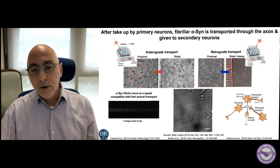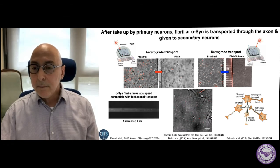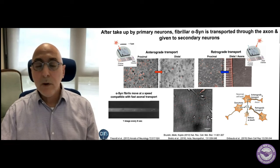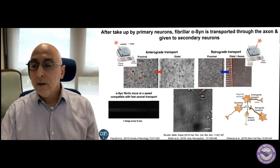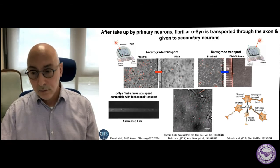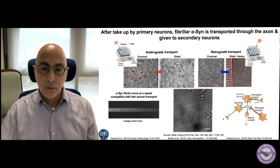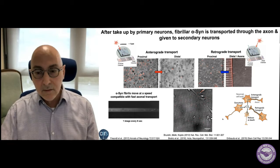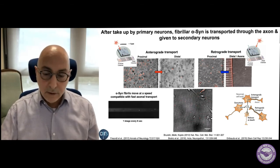To illustrate what is going on: aggregates released from dying cells are taken up by the cell body of neurons and transported to the axonal end — what we call anterograde transport. When aggregates are bound to the axon, they are transported retrograde to the cell body. This is an active transport mediated by molecular motors called dyneins and kinesins, allowing transport of these aggregates along the microtubule network in one direction or the other.